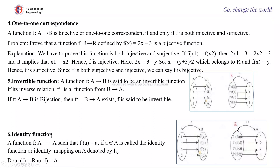Next, the identity function. A function f from A to A such that f(a) = a — that is, every element is associated with itself — is called the identity function. On set A it is denoted i_A, and on set B it is i_B. The domain of f equals the range of f equals A in the case of an identity function.